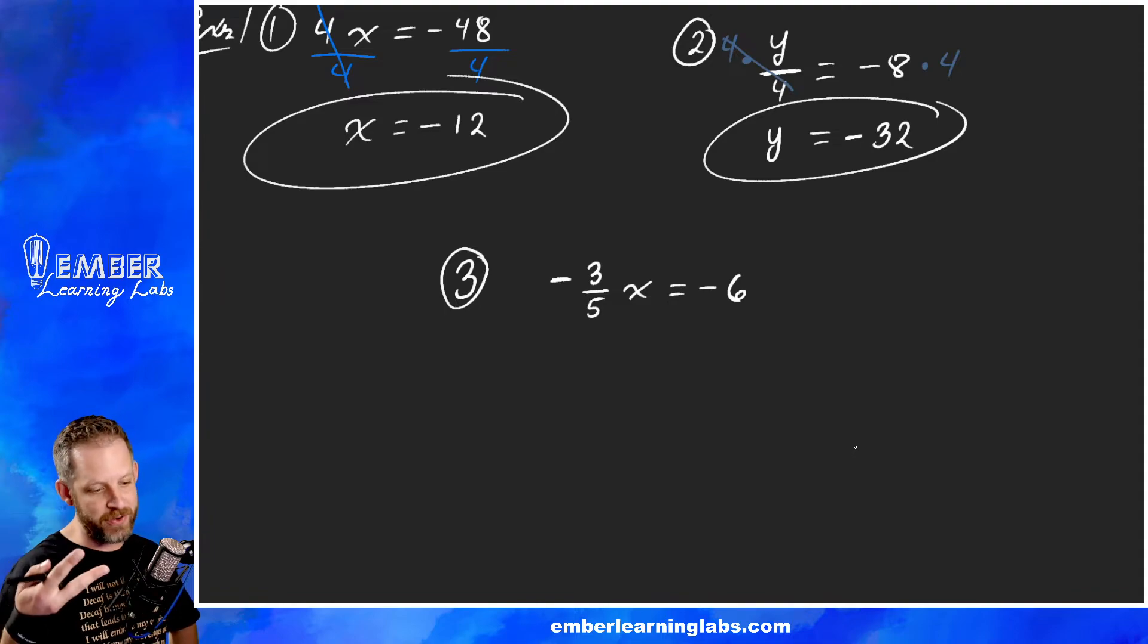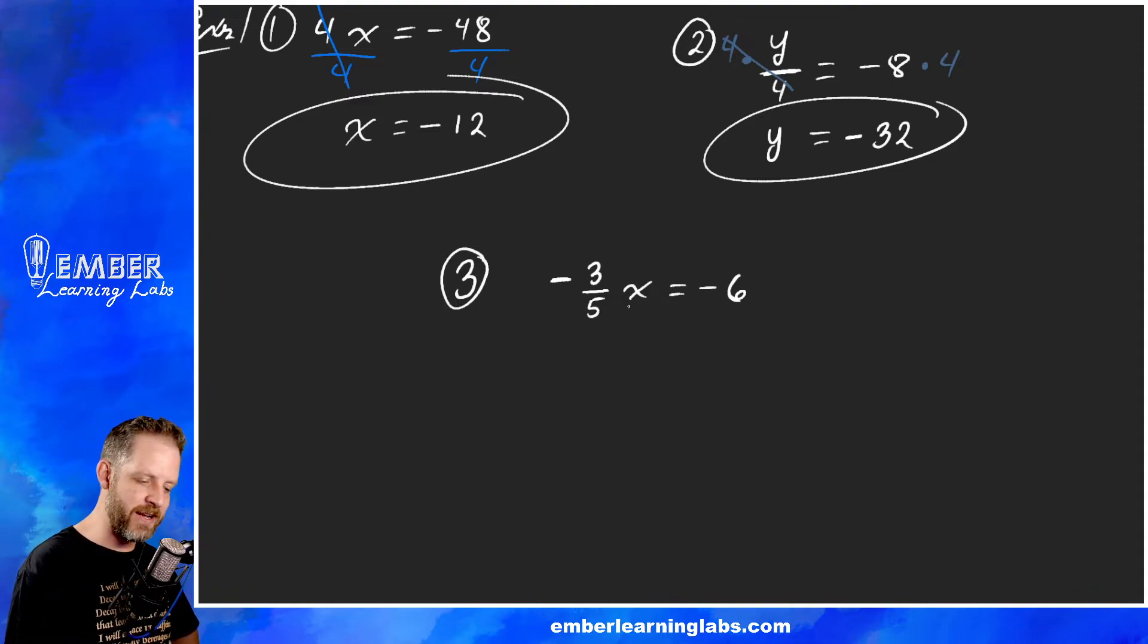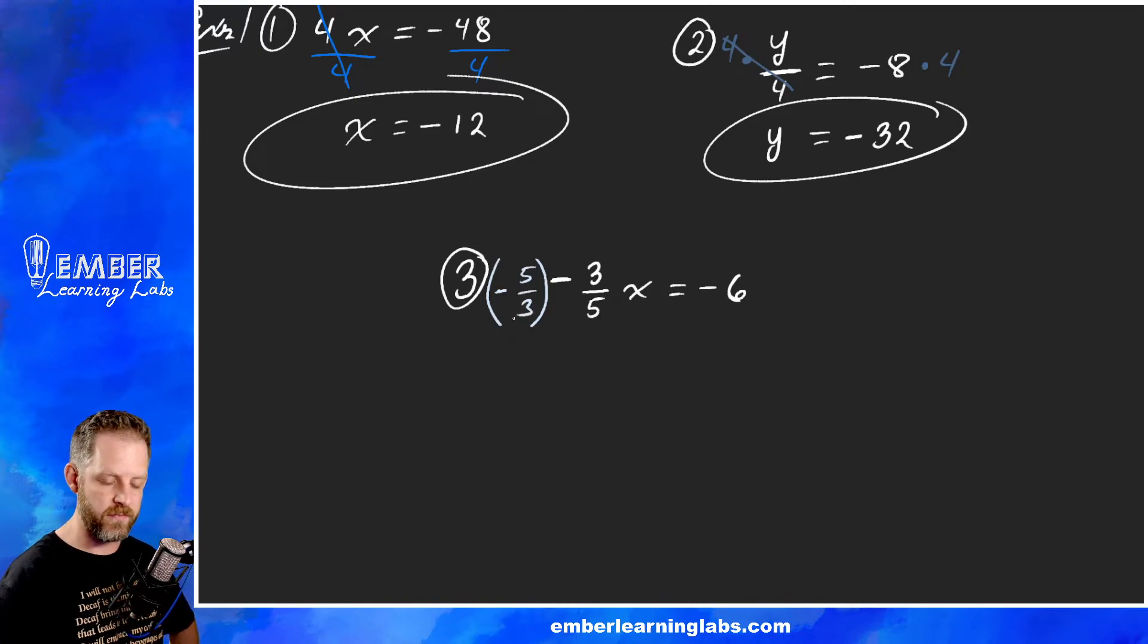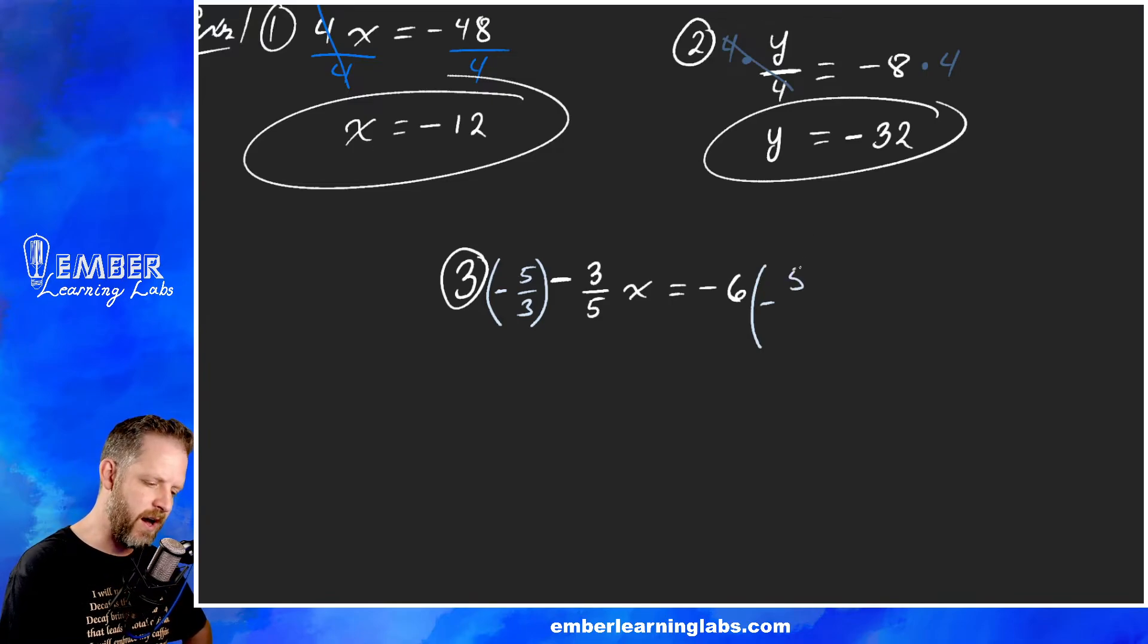We multiply by the reciprocal. So to get rid of a fraction multiplied onto a variable, we multiply both sides by the reciprocal of that fraction because that's the same as dividing that fraction. We're going to multiply times negative five thirds. If we do it to this side, we got to do it to that side too. Multiply times five thirds.